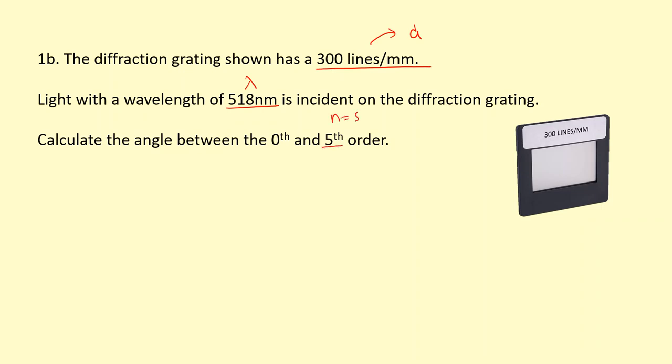So firstly, I'm going to calculate the slit separation. That's going to be 1 over 300 and then times 10 to the minus 6 to convert to meters. And then I'm going to use this equation here. Firstly, I know I want theta, so let's just make that the subject. So sine inverse of n lambda over d, that should give me theta if I put those in.